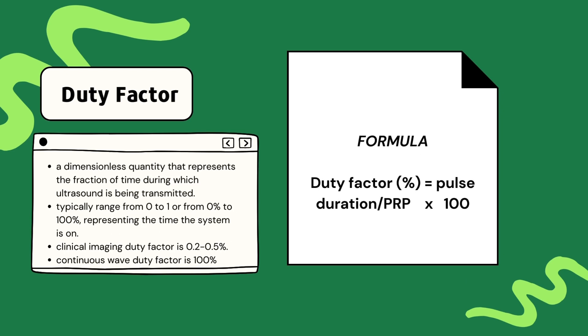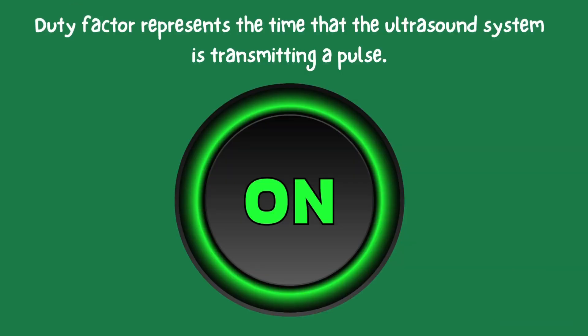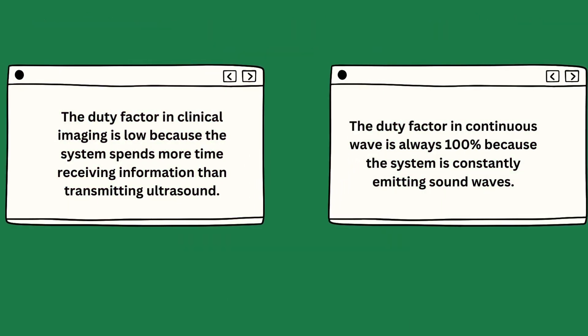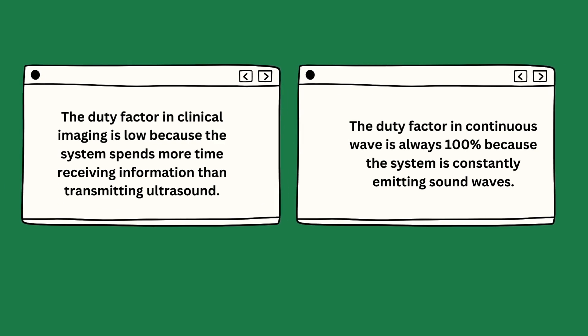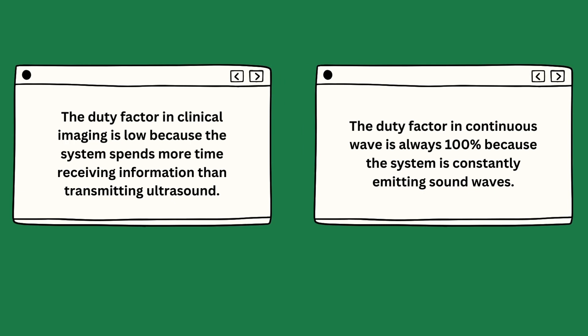Finally, let's discuss duty factor. Duty factor is represented as a dimensionless quantity, giving us insight into the fraction of time during which ultrasound pulses are actively transmitted by the system. Think of duty factor as a percentage indicating how much time the ultrasound system spends actively transmitting. In clinical imaging, duty factor typically ranges from 0.2% to 0.5%, representing a very small fraction of time during which ultrasound is emitted. This is because the ultrasound system spends way more time receiving than it does actually transmitting.